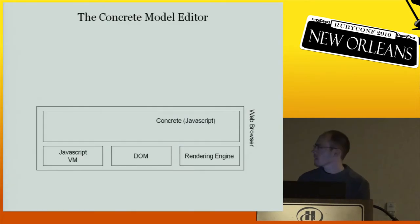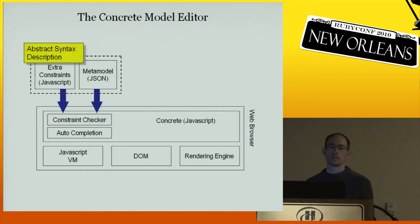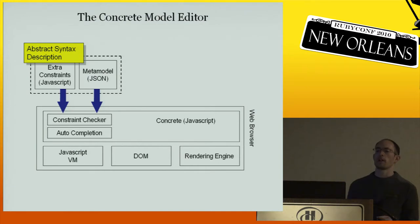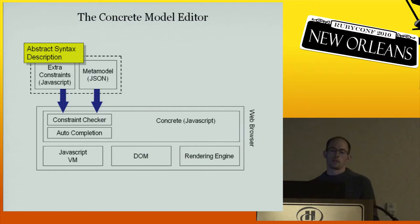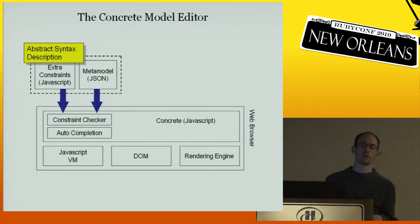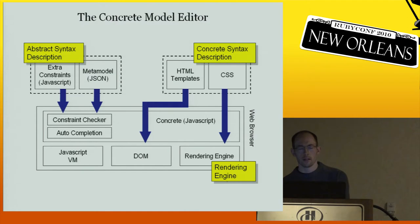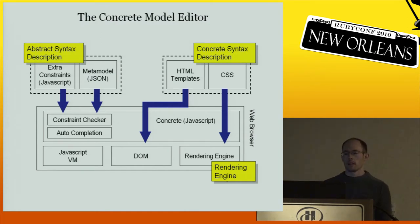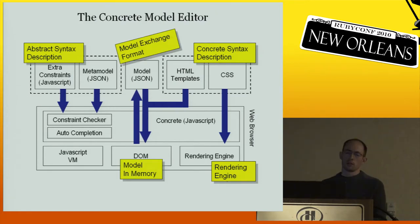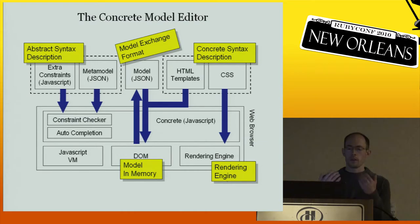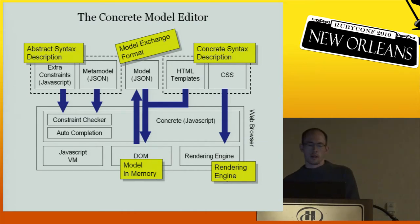Here's a summary of how Concrete works. Concrete is a JavaScript program running in the browser. It gets the abstract syntax definition by means of the metamodel in JSON, plus optional extra constraints written in JavaScript — because the metamodel cannot express all constraints due to EMF compliance. This goes into the constraint checker and autocompleter. On the other hand, the concrete syntax is added by HTML and CSS — it's optional. The model itself is represented in the DOM, and if you exchange the model, this is done by JSON. You can get the JSON from the widget and put JSON into the widget — it's just a widget you can basically integrate everywhere.